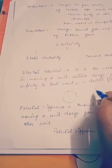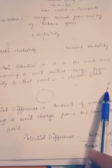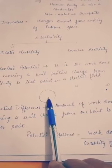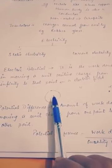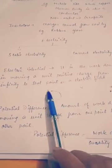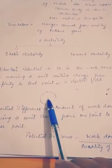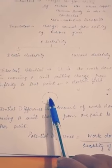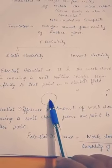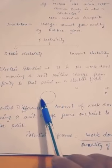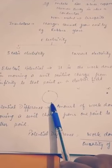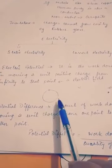The work which I am doing to move a unit positive charge from infinity to a point inside the electric field of a charge is the electric potential. Now, what is electric field? Electric field is the area around a charge in which its force can be experienced. If I place a charge here, the area around it in which its influence or force can be experienced by any other charge placed there — this area is called the electric field of that charge.